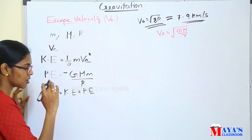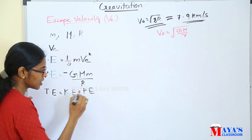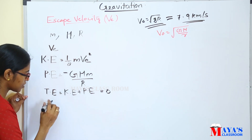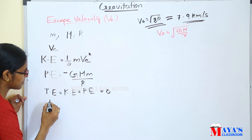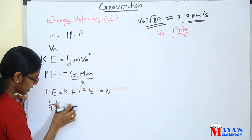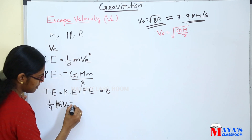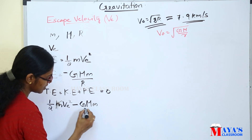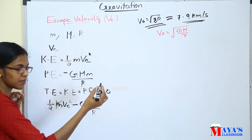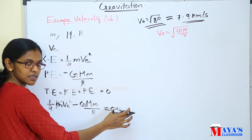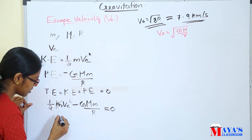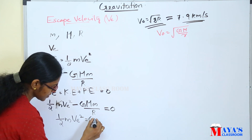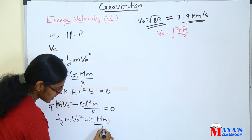That is the key concept: total energy at infinite distance is zero. So the total energy at the surface equals kinetic energy plus potential energy, which is: half m Ve squared plus (minus GMm/R) equals zero. Rearranging, half m Ve squared equals GMm/R.